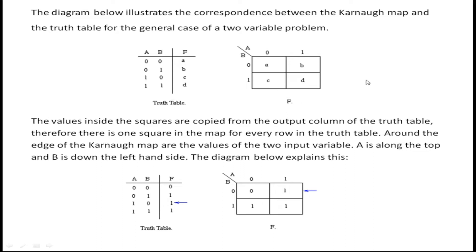The values inside the squares — A, B, C and D — are copied from the output column. This is the output column of the truth table, and from it we have copied the values into those square boxes, which we call cells.